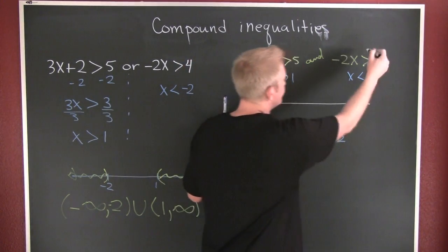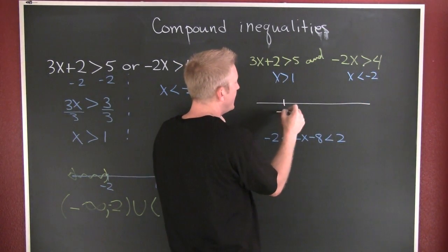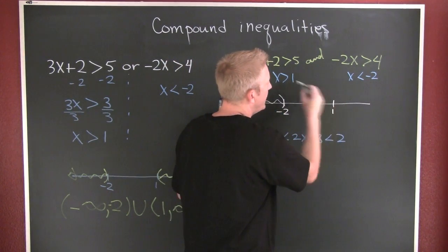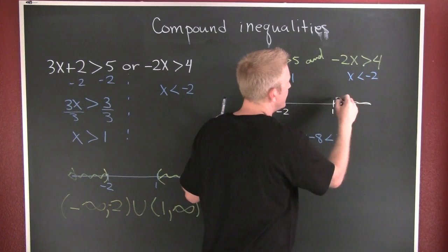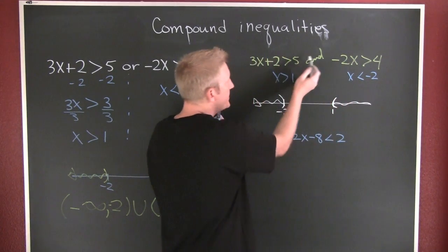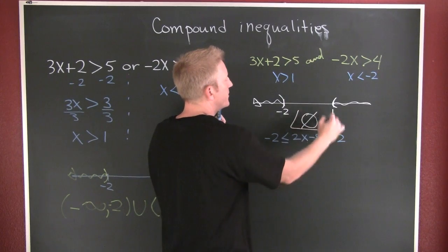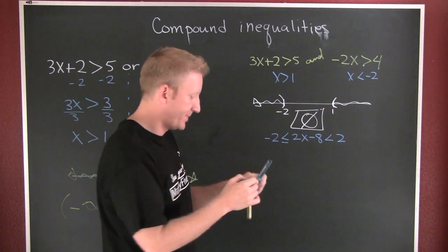Then I graph them. Here on minus 2, I'm going to shade to the left. And it's open. On 1, I shade to the right. And it's open. Where do these overlap? Never. Nothing. No solution. No solution. Empty set.